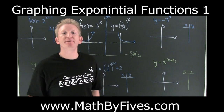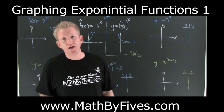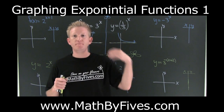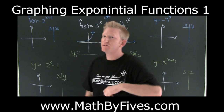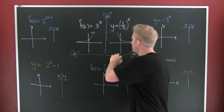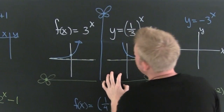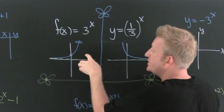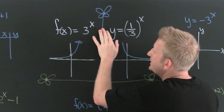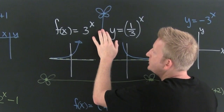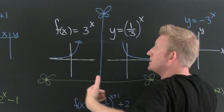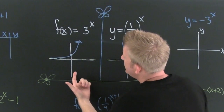We're going to be graphing some exponential functions — it's not as rough as it sounds. This graphs just like everything else, as long as you know the special form. You can shift it: if it's in the X group it goes left and right, if it's outside the X group it goes up and down. We'll talk about some flips later.